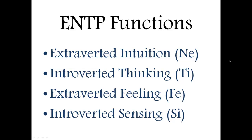Extroverted intuition also gives them a bit of an off-the-wall sense of humor. Next is introverted thinking, or TI, which is more internal — this is how they deal with things logically. They want stuff to make sense, so they're constantly sorting out their environment and piecing it all together, forming a web or framework in their head of how everything works. Since this is introverted, it can be difficult for them to explain to other people.